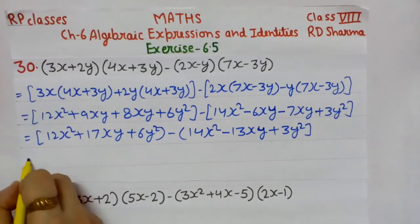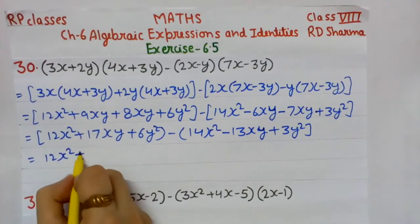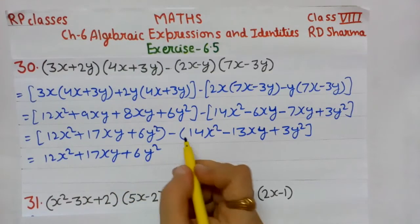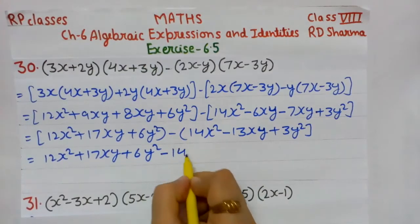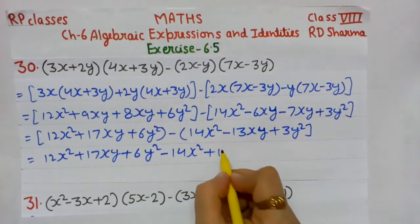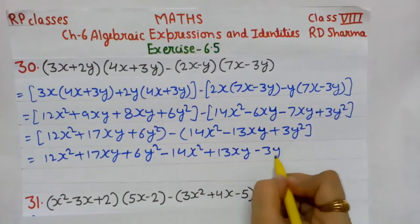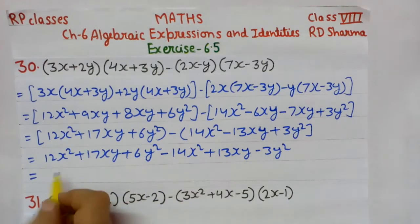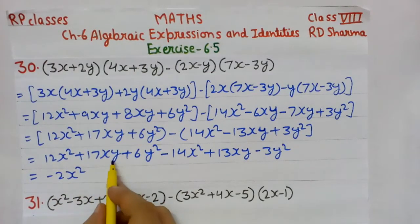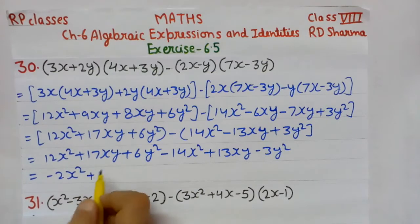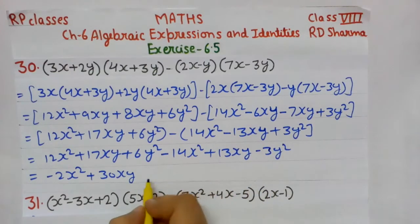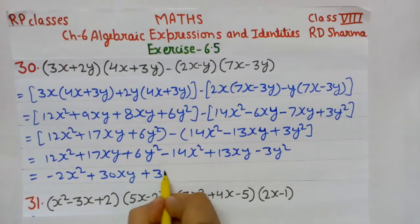Now students, we open the bracket. We have: 12x² + 17xy + 6y². There is a minus sign before the second bracket, so the signs of the entire bracket change: it becomes minus 14x², plus 13xy, minus 3y². Now solving like terms: 12x² − 14x² = −2x². 17xy + 13xy = 30xy. 6y² − 3y² = 3y². So the answer is: −2x² + 30xy + 3y².